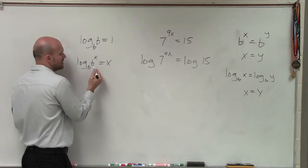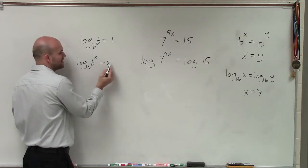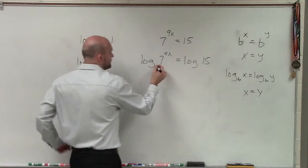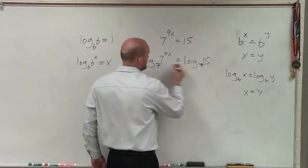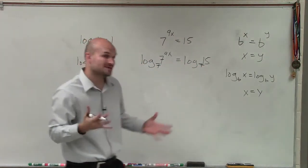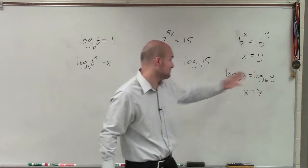That if I take the same base of my value, and that's raised to an exponent, that's just going to equal my exponent. Therefore, if I choose base 7 for my logarithm, because remember, it has to be the same base on both sides, right? Base b of b, base 7, and base 7.